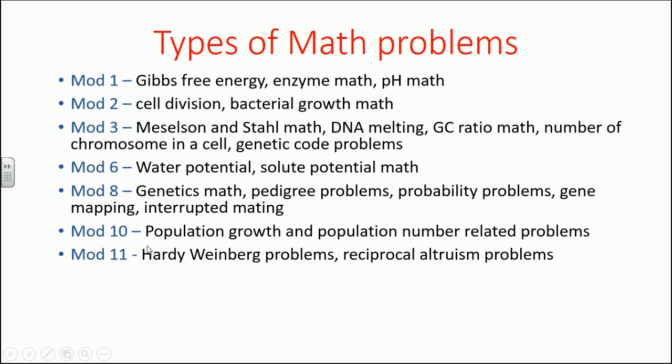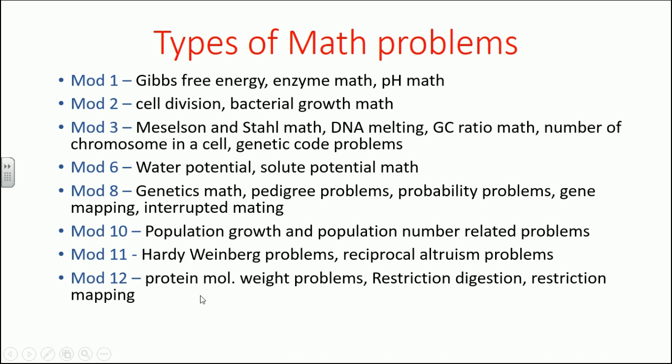Module 10 is equally important for math. Module 11, evolutionary biology, which is also tagged a little with population genetics, they will ask questions like Hardy-Weinberg problems, reciprocal altruism problems especially with Hamilton's rule. This is really important because they ask these questions every time.